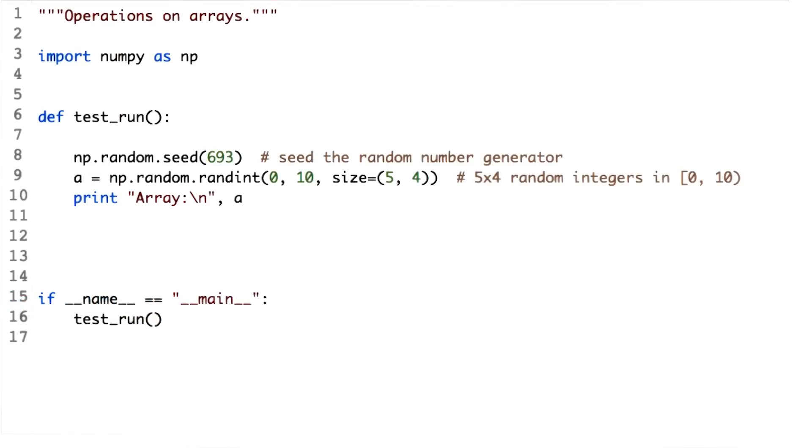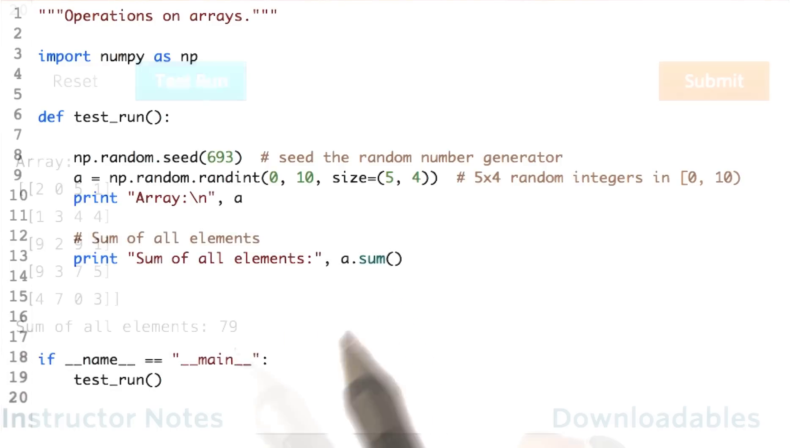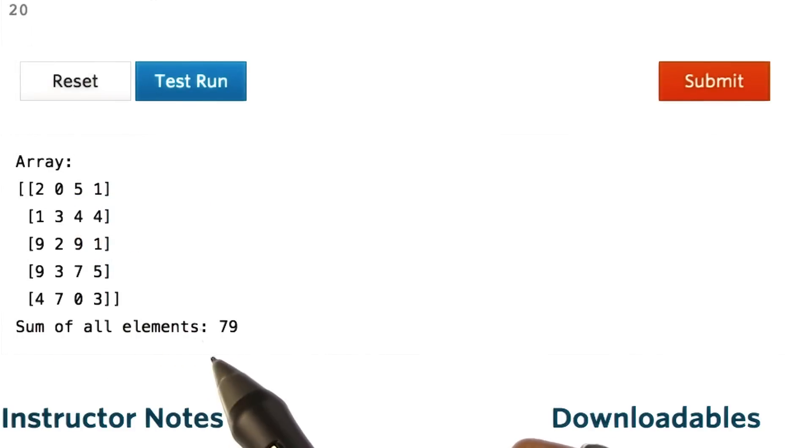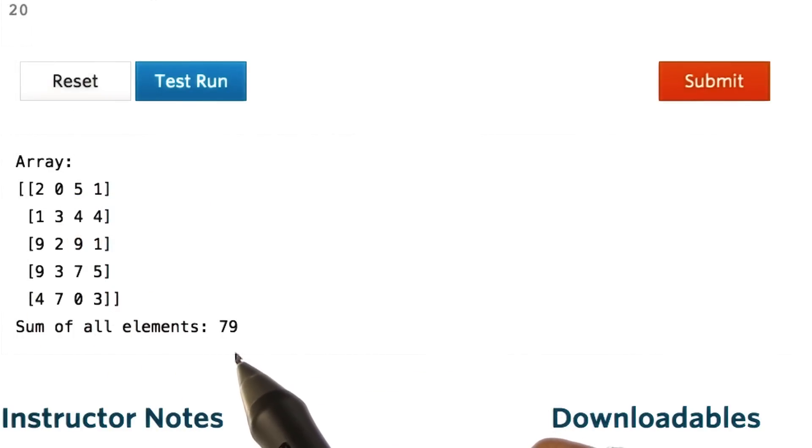Summing all the elements in an array is as simple as calling the sum function on the array. Here is our array a and we call the sum function on it. Let's check the output. This is our array and the sum of all elements comes out to be 79.